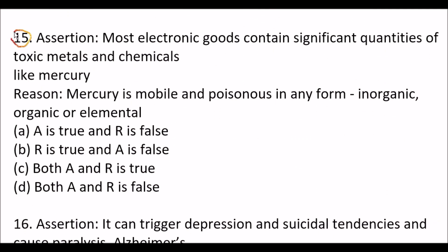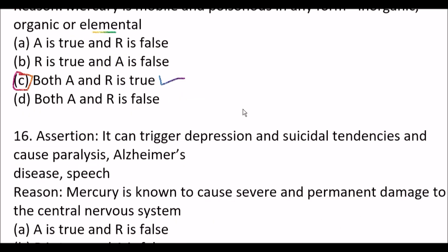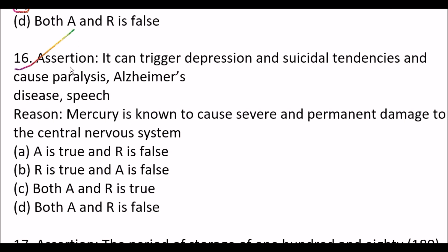Question 15 is assertion and reason: Assertion - most electronic goods contain significant quantities of toxic metals and chemicals like mercury. Reason - mercury is mobile and poisonous in any form: inorganic, organic or elemental. Both assertion and reason are true, so Option C is the right answer. Next assertion-reason question: Assertion - mercury can trigger depression and suicidal tendencies and cause paralysis and Alzheimer's disease. Reason - mercury is known to cause severe and permanent damage to the central nervous system.